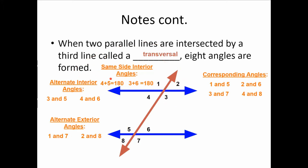The most important relationship: same-side interior angles. Angles 4 and 5 are on the same side of the transversal and on the interior of the parallel lines. Unlike the other relationships, these are not congruent — instead, they add up to 180 degrees, making them supplementary. Angles 3 and 6 are also same-side interior: same side of the transversal, interior to the parallel lines, and supplementary — adding up to 180 degrees.